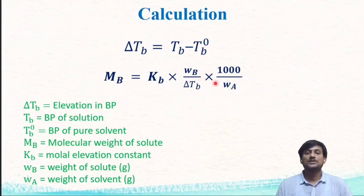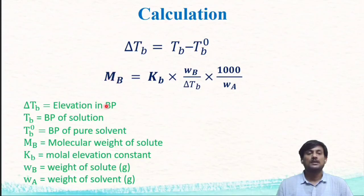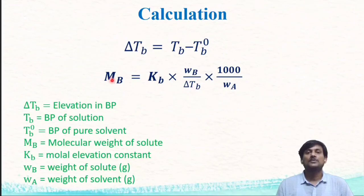The relation is: Mb = (Kb × Wb × 1000) / (delta Tb × Wa). Here, delta Tb is the elevation in boiling point; Tb is the boiling point of the solution; Tb0 is the boiling point of the pure solvent; Mb is the molecular weight of the solute; Kb is the molar elevation constant or ebulioscopic constant; Wb is the weight of solute in grams; and Wa is the weight of solvent in grams. When you substitute Kb, Wb, delta Tb, and Wa into this equation, you will get the molecular weight of the unknown solute. Please watch the earlier video for the derivation of this relation.